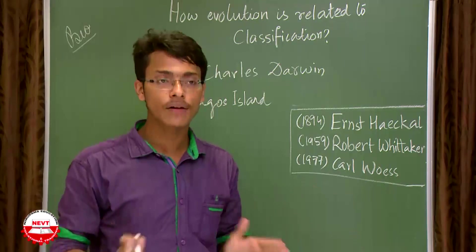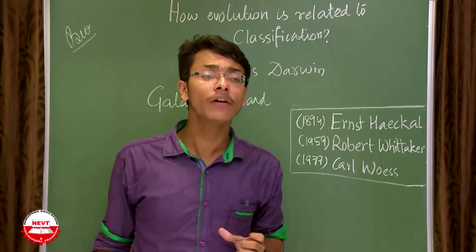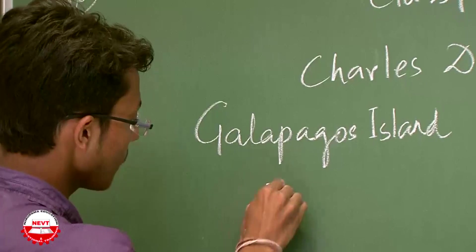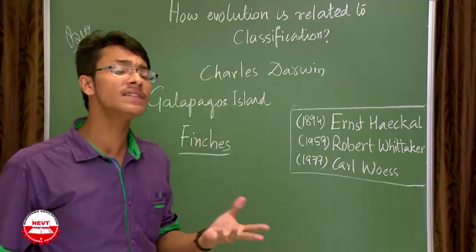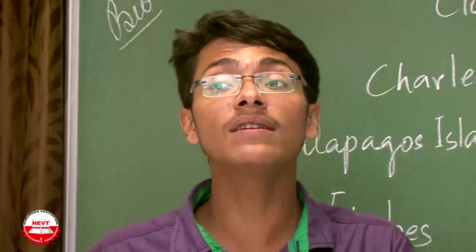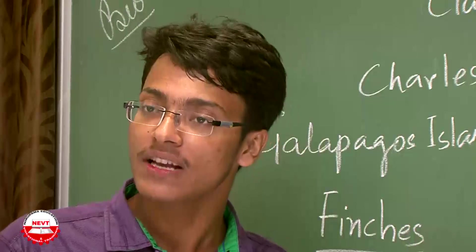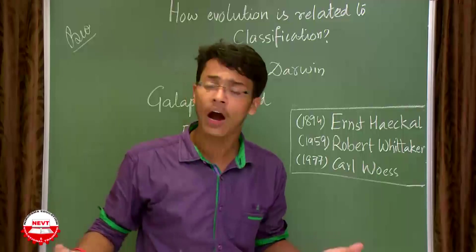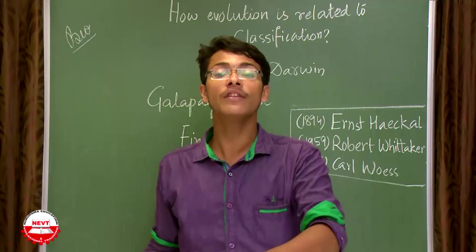The HMS Beagle reached near an island called the Galápagos Island. You will understand why I am telling you this incident of Charles Darwin. When he reached the Galápagos Island, he observed a certain variety of birds — a species called finches. Finches are very similar to sparrows in structure. The most surprising fact for Darwin was that these finches showed variety within that same small island.